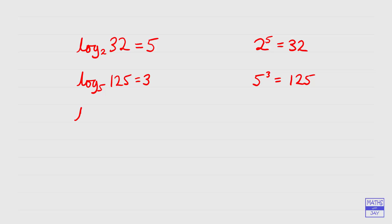And another one — let's have log to base 7 this time. So log to base 7 of 49. We're thinking about 7 to the power of something equals 49. Well, that's just 7 squared. So we've got a power of 2, meaning the log — which is the power — is 2.